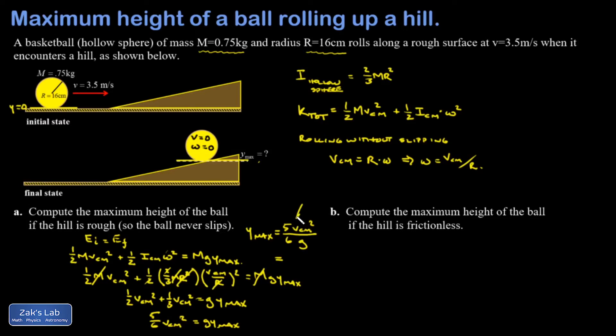Y max is going to be five v center of mass squared over six g. When I plug in the numbers for v center of mass in the initial state, that was three and a half meters per second, and of course we all know what g is. When I plug in the numbers I get 1.04 meters for the maximum height.